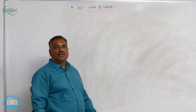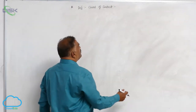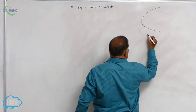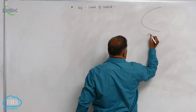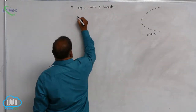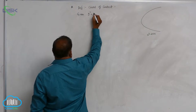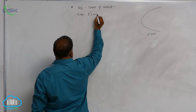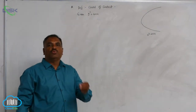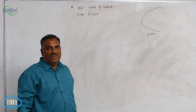Let us discuss the chord of contact. The parabola is y squared equal to 4ax. From an external point, two tangents can be drawn to a given parabola.